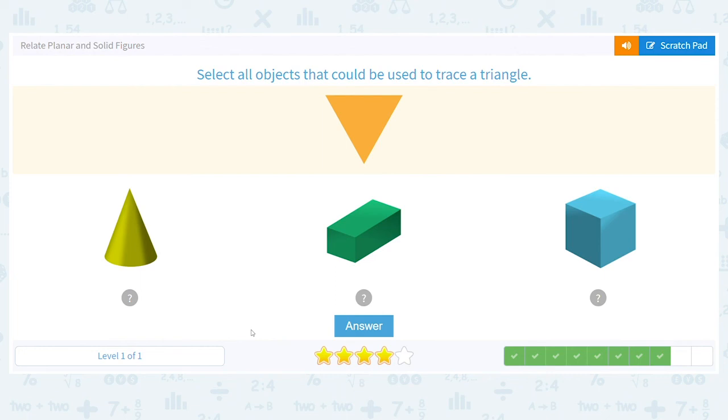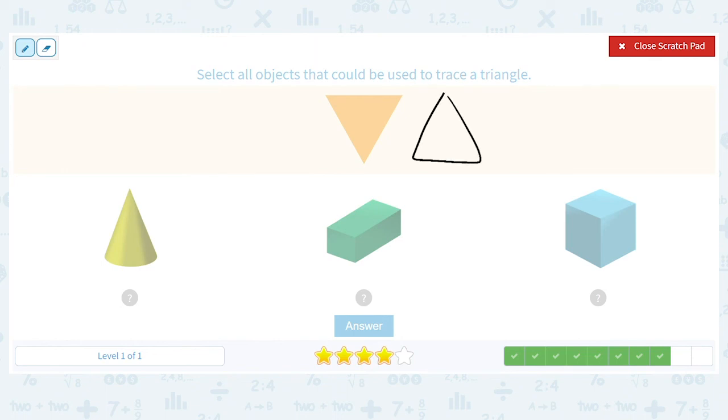Next up, we have triangle. And again, I'm going to draw the triangle the other way. Because again, we're worried about the shape, not the way it's facing.